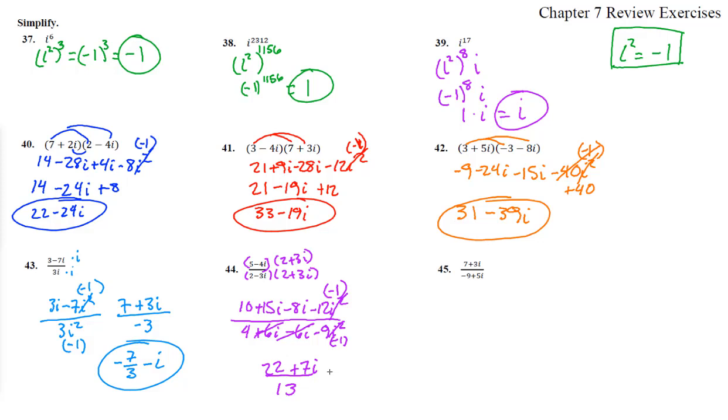You could leave it like this, or the official format is a real portion and then an imaginary portion. So you could write it as 22 13ths plus 7 13ths i. The real part is 22 13ths, and the imaginary part is 7 13ths i.